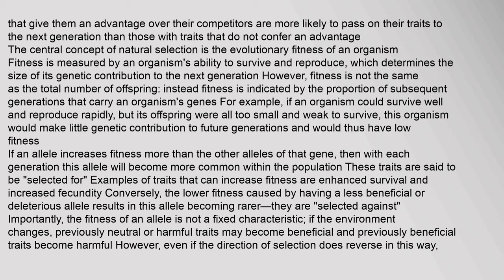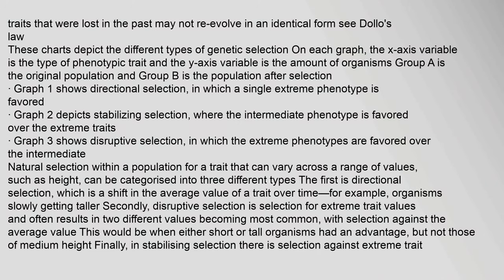Importantly, the fitness of an allele is not a fixed characteristic. If the environment changes, previously neutral or harmful traits may become beneficial and previously beneficial traits may become harmful. However, even if the direction of selection reverses, traits that were lost in the past may not re-evolve in an identical form — see Dollo's law. Different types of genetic selection include directional selection, in which a single extreme phenotype is favored; stabilizing selection, where the intermediate phenotype is favored over the extreme traits; and disruptive selection, in which the extreme phenotypes are favored over the intermediate.